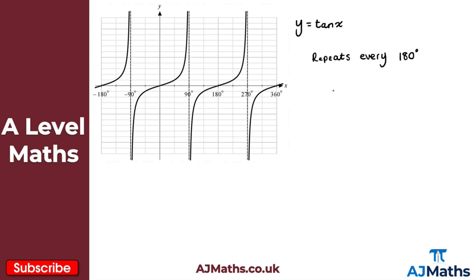Just like the other two functions, tan x crosses the x-axis at a number of different points — minus 180, zero, 180 degrees, 360, and so on. With sine x and cos x we had a maximum and minimum value, but that isn't true for tan x — there is no maximum or minimum value for y equals tan x. That's important to note.